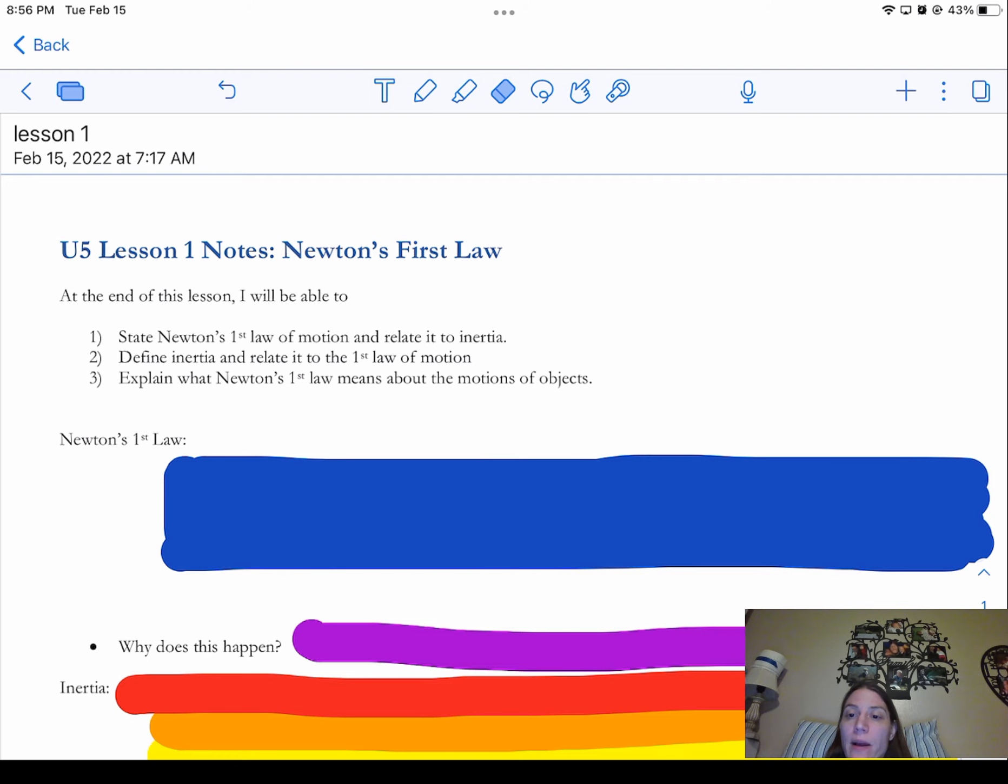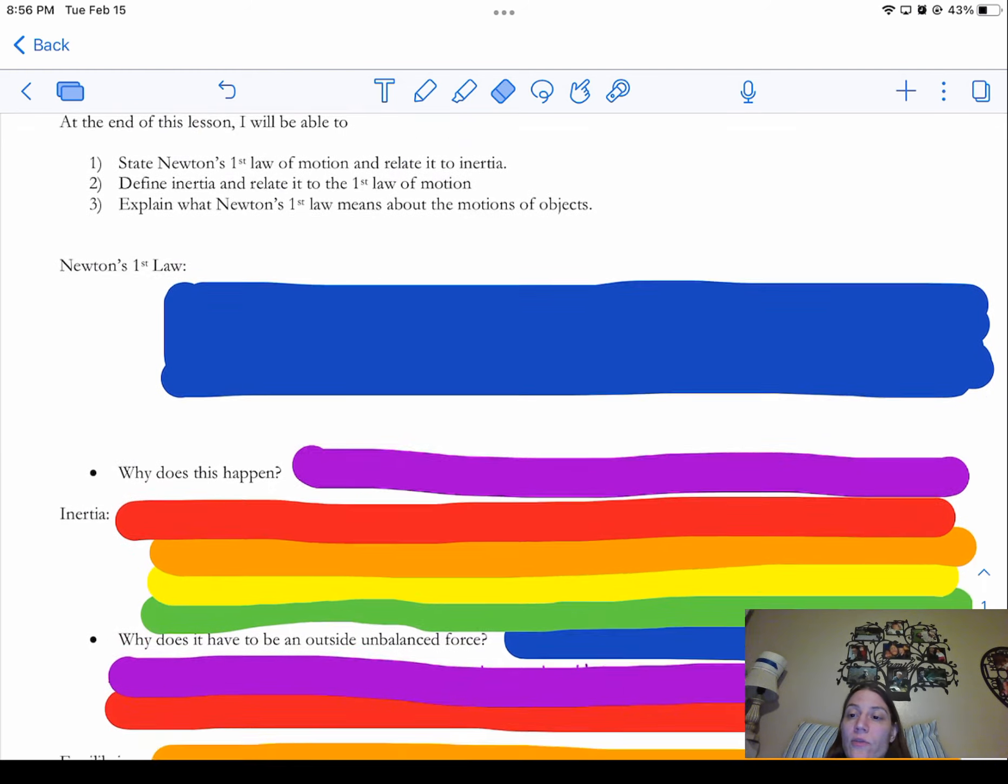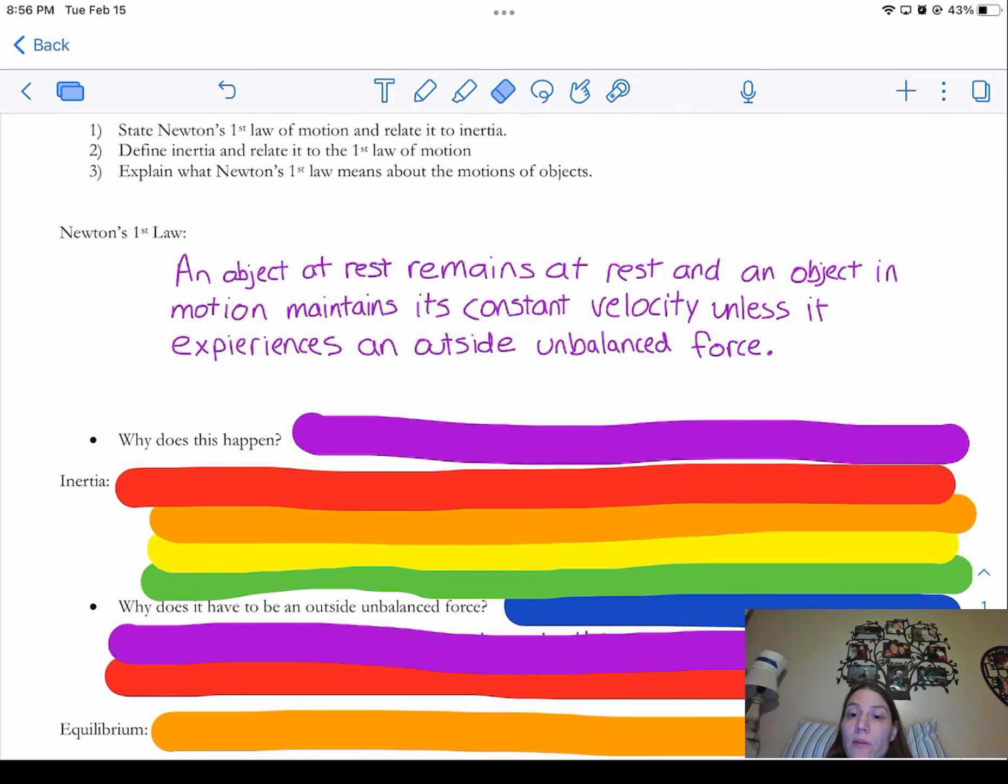And so let's start by explaining what Newton's First Law states. So under this blue box right here, we've got an object at rest remains at rest and an object in motion maintains its constant velocity unless it experiences an outside unbalanced force. That's what Newton's First Law says.